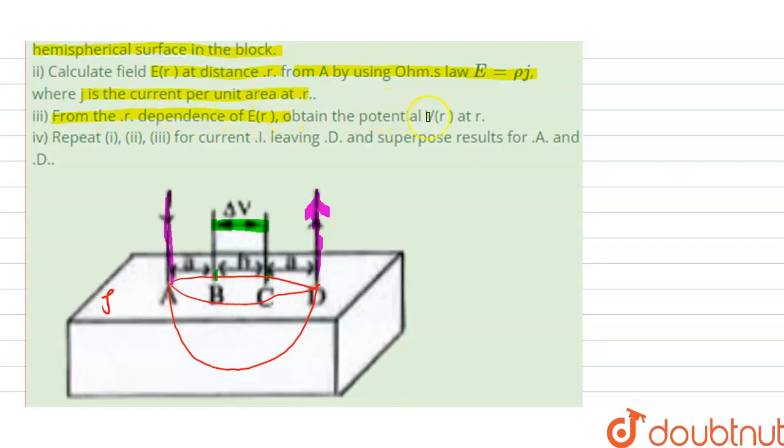From the r dependence of E, obtain the potential V(r) at r. For the r dependence on E we are going to find the potential V(r) by using the relation E equal to minus dV divided by dr. From here we can calculate dV equal to minus integration of E dot dr.